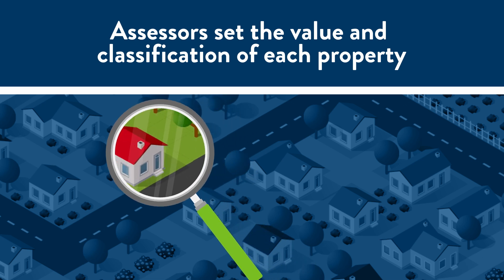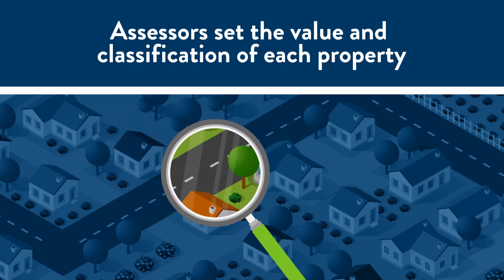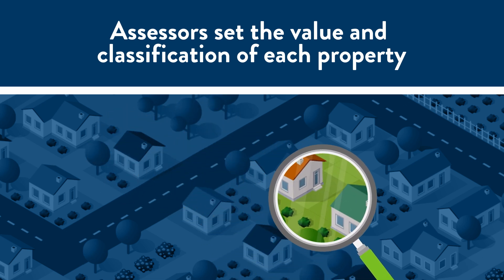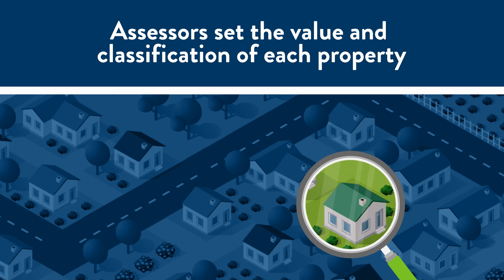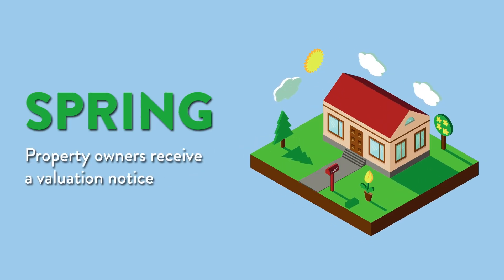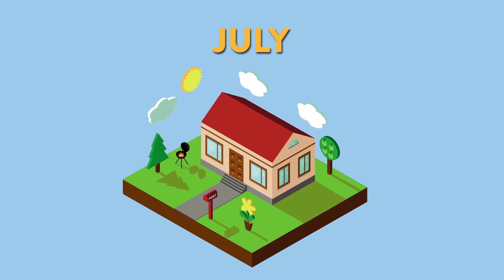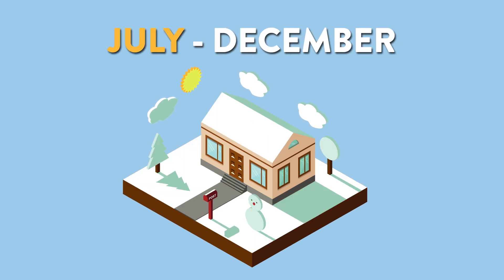The values and classifications are established based on information that the assessors collect in the months leading up to January 2nd. In the spring of each year, property owners receive a valuation notice that provides them information on the estimated market value and classification for their property. Starting in July through December, the calculation of taxes begins using those final values and classifications that the assessor has set.